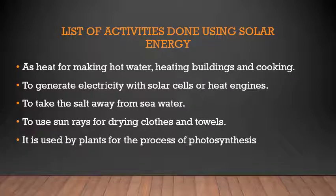Plants prepare food using solar energy. We get heat and light from the sun — it is the main source of our energy. Here are some activities done using solar energy: as heat for making hot water, heating buildings, and cooking. You must have seen a solar rice cooker — it stores solar energy and uses it for cooking rice.